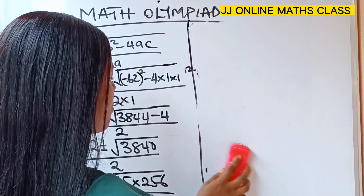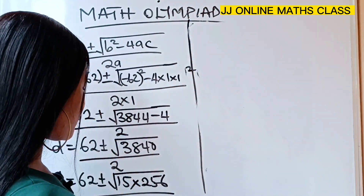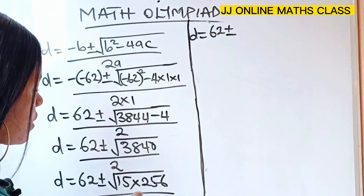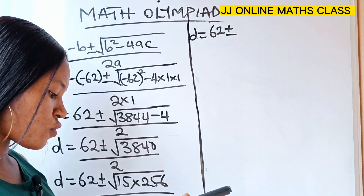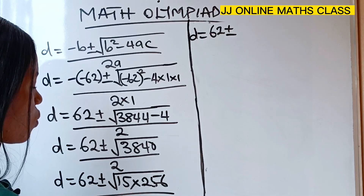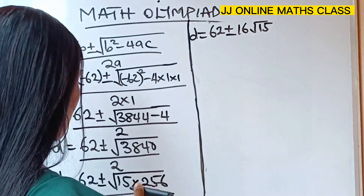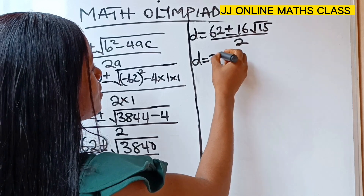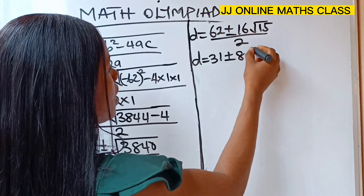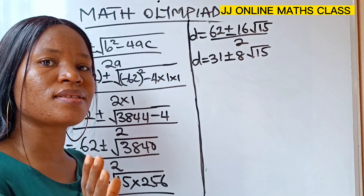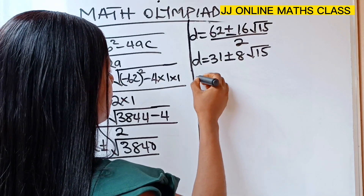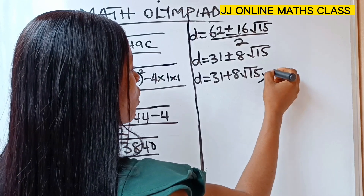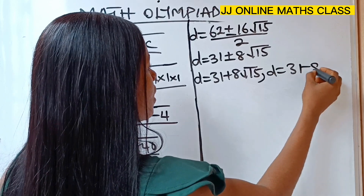It's becoming more interesting. So d is equal to 62 plus or minus — root 256 gives us 16 — so this becomes 16 root 15, all divided by 2. That means d equals 62 over 2, plus or minus 16 over 2 times root 15, which gives us d equals 31 plus or minus 8 root 15. So we have two values of d: d equals 31 plus 8 root 15, or d equals 31 minus 8 root 15.